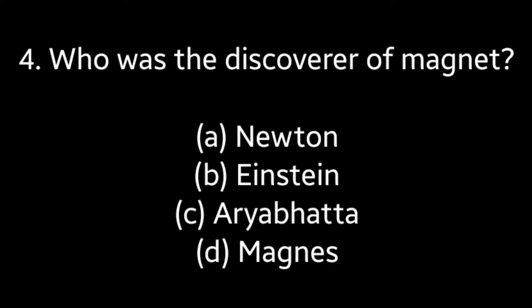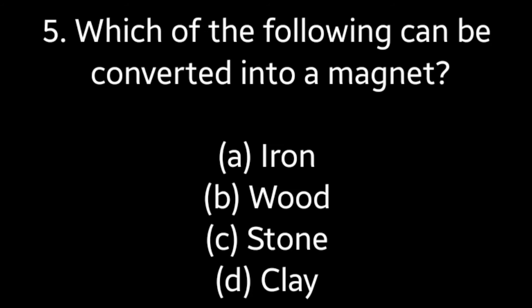Question number four: who was the discoverer of magnet — Newton, Einstein, Aryabhata, or Magnus? Answer is option D: Magnus. Question number five: which of the following can be converted into a magnet — iron, wood, stone, or clay? Answer is option A: iron.